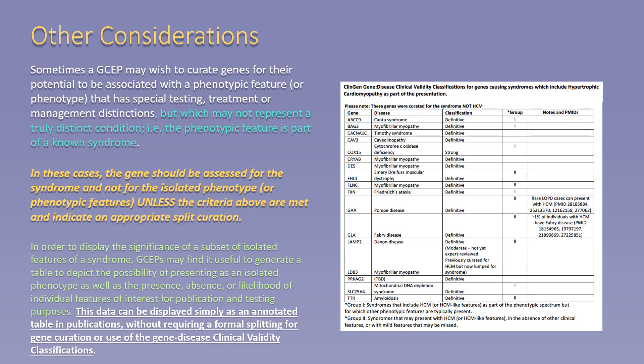For example, the phenotypic feature is part of a known syndrome. In these cases, the gene should be curated and classified for the syndrome and not for the isolated phenotype, unless the criteria we have reviewed have been met and indicate an appropriate split. For example, gene curation expert panels may wish to identify which syndromic genes have the potential to present with an apparent isolated phenotype or phenotypic feature, to ensure that the appropriate genes are tested in patients presenting with that condition.